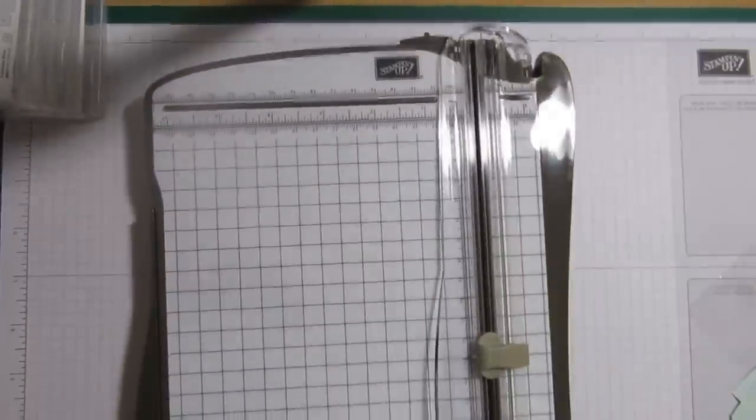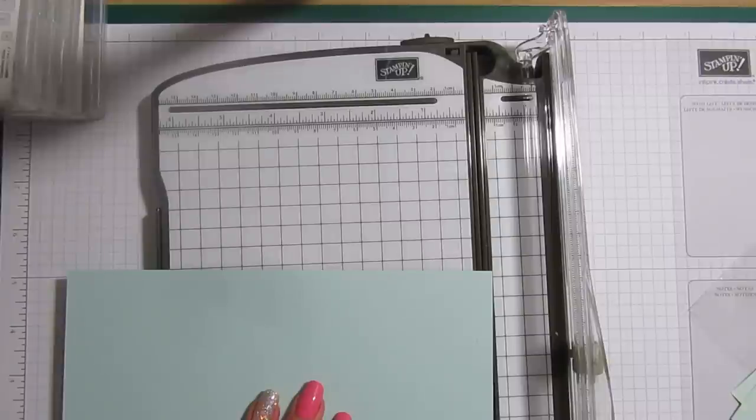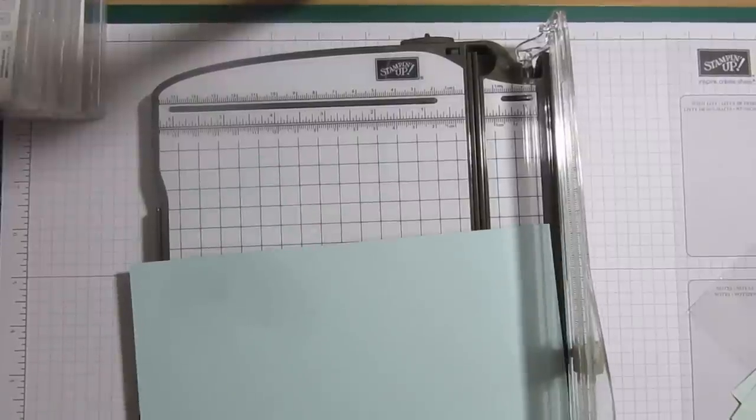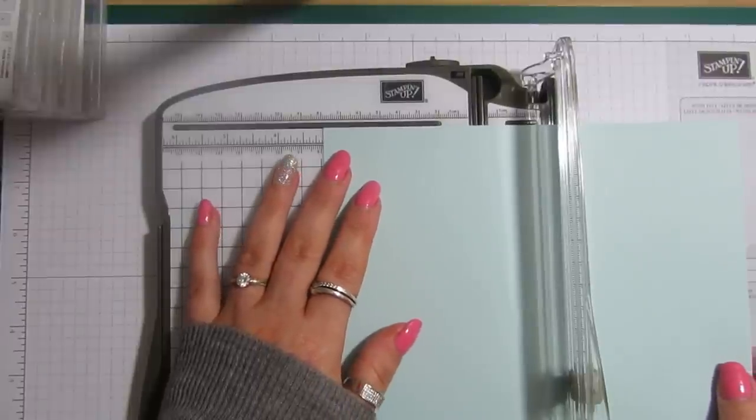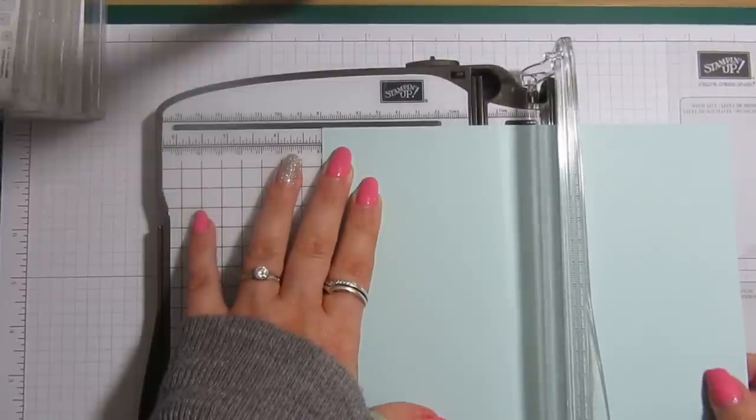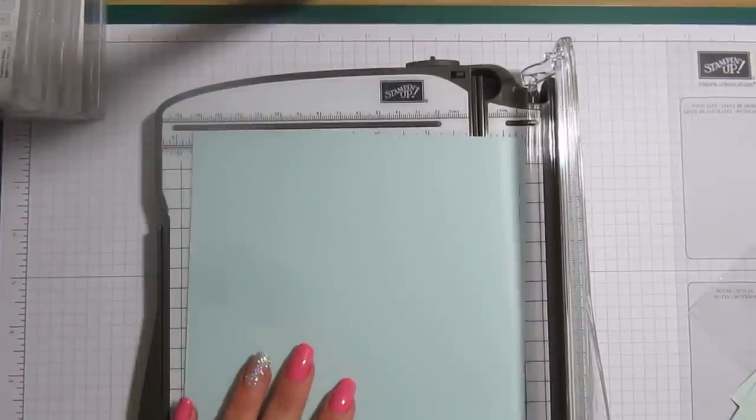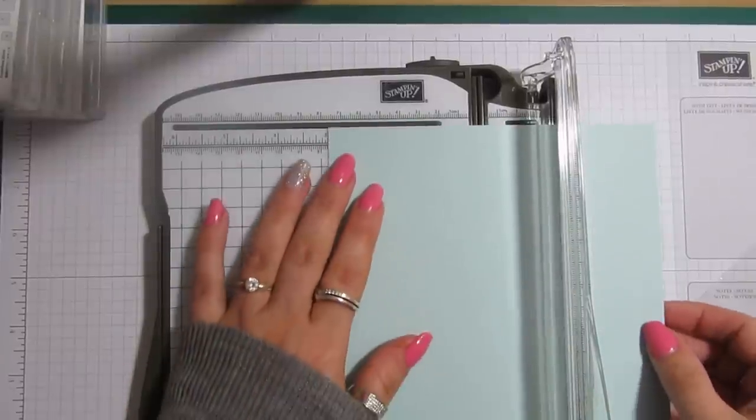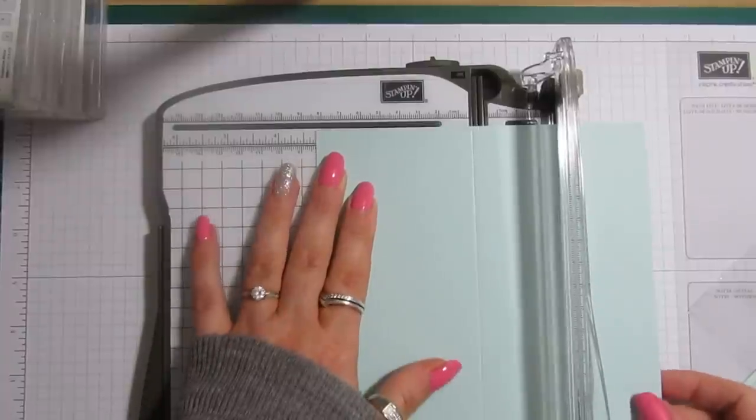So, first of all, we're going to score our piece of card. So, all you need to do is pop it in your trimmer or your scoreboard, whatever you're going to use. And you need to score the short side at 3⅛ of an inch. And 3½ inches.